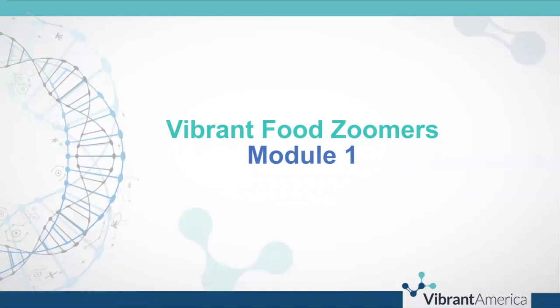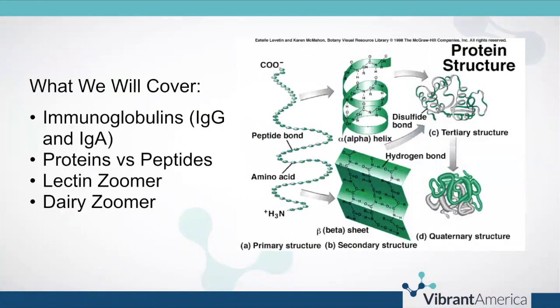Welcome to Module 1 in the Vibrant Food Zoomers Modules in the Functional Academy. What we'll cover today will be an overview and understanding of immunoglobulins, especially IgG and IgA. We'll discuss proteins and peptides as they relate to testing for food sensitivities and antibodies, then walk through the basic understanding of lectin zoomer and dairy zoomer from an interpretation standpoint as well as recommended interventions.